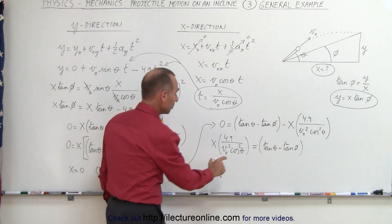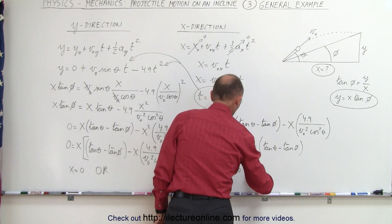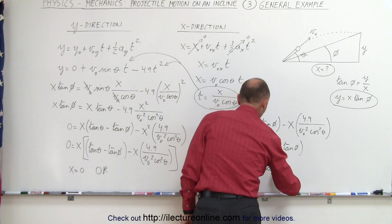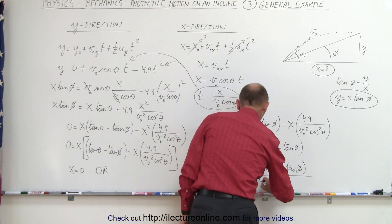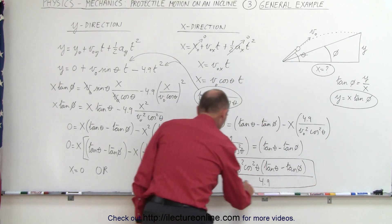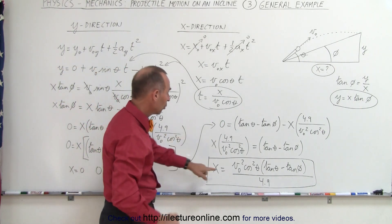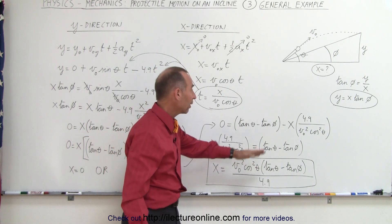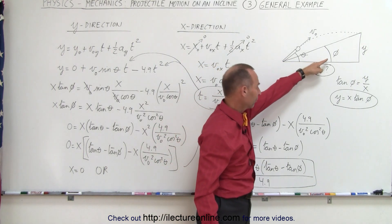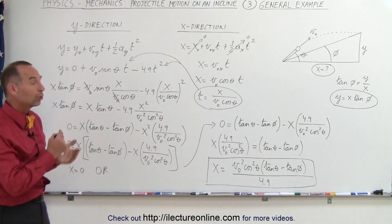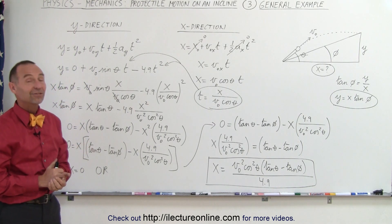Finally, solving for x by multiplying both sides by v-initial squared times cosine squared of theta and dividing by 4.9, we get: x equals v-initial squared times cosine squared of theta times (tangent of theta minus tangent of phi), all divided by 4.9. This equation is valid for any projectile motion on any incline — the horizontal distance reached equals the initial velocity squared times cosine squared of the launch angle times (tangent theta minus tangent phi), all divided by 4.9. That's the general equation.